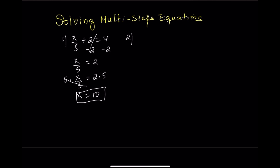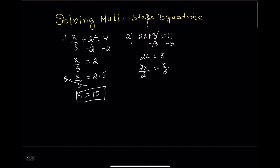Equation 2: 2x plus 3 equals 11. Step 1: subtract 3 from both sides — 2x equals 8. Step 2: divide both sides by 2 — x equals 4.